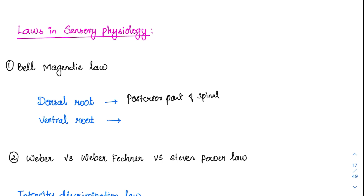Whenever the descending tract is studied, they always come to the anterior region. That is, the ventral root goes to the anterior region. This Bell-Magendie law just tells about the location — dorsal is carried into the dorsal system and ventral is carried in the anterior region.